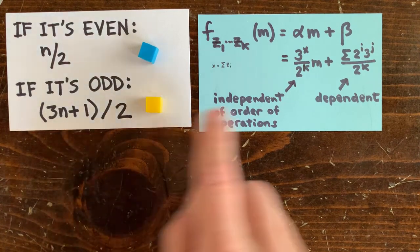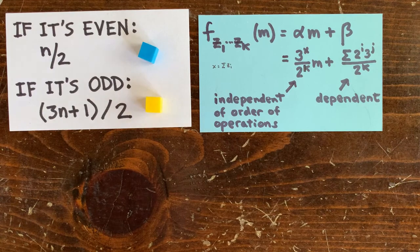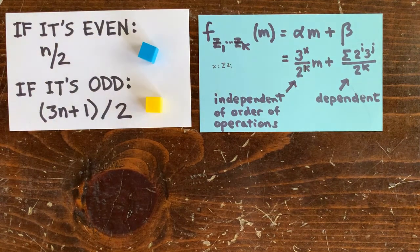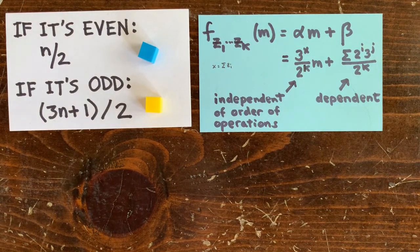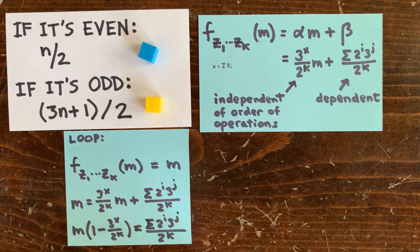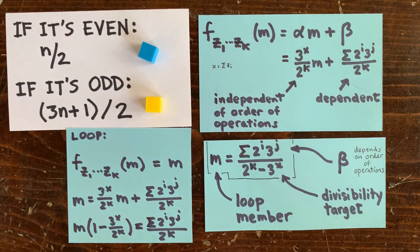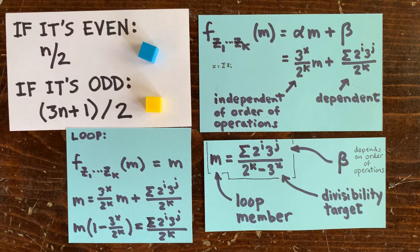Now, we don't want to forget about the little plus 1, so we get this other term where we multiply a bunch of powers of 2 with a bunch of powers of 3. Those i's and j's do depend on the order of the operations. And like before, we can take this formula and use it to find loops. We get m equals this. So if beta is a multiple of 2 to the k minus 3 to the x, then m is an integer and we have a valid loop.